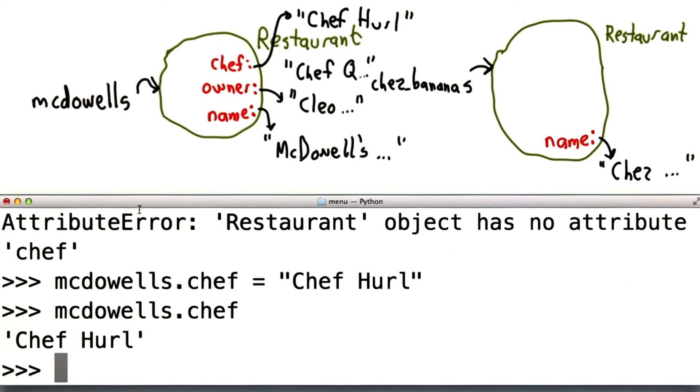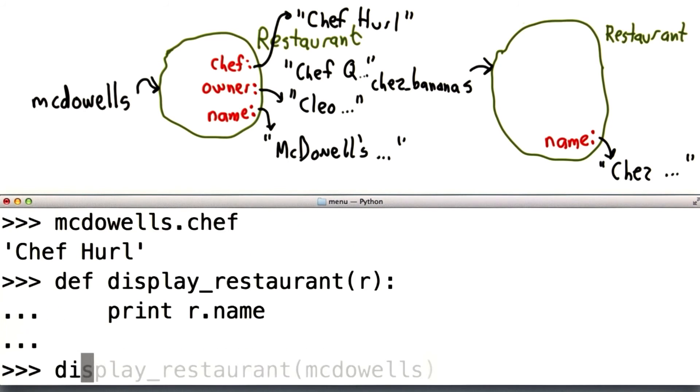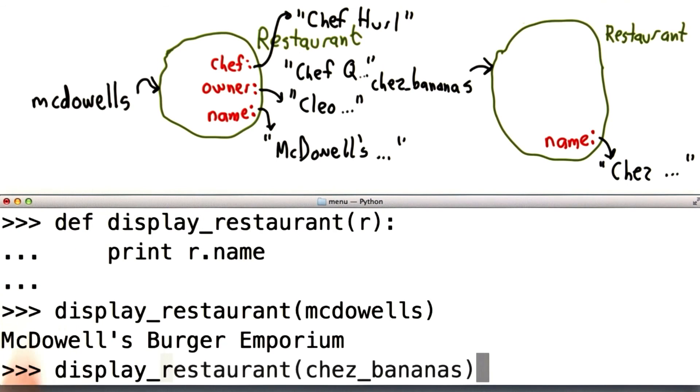We can define functions that work on our objects. Let's define a display restaurant function. And it's going to take a restaurant as input. And all it will do is print the name of the restaurant. So let's try that. We'll call display restaurant, passing in the object McDowell's refers to, which has the name McDowell's something or other. We can do the same thing with the object Chez Bananas refers to.